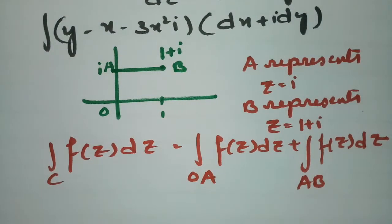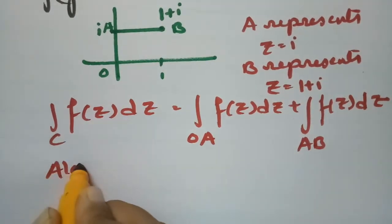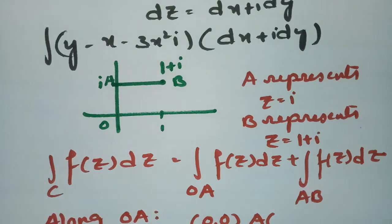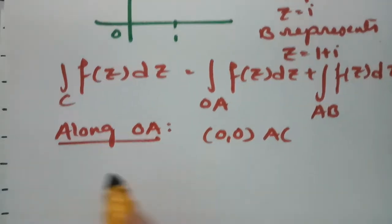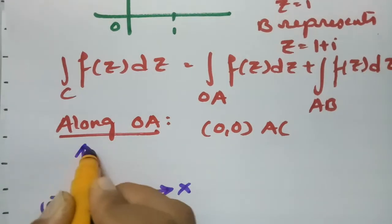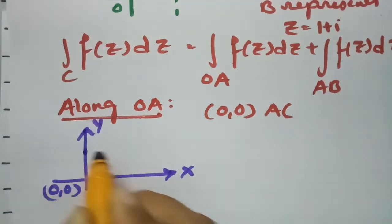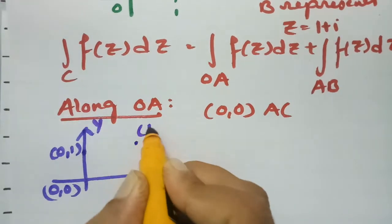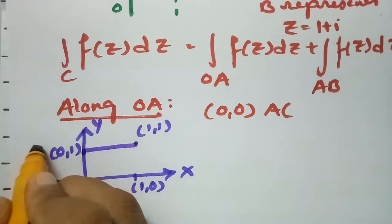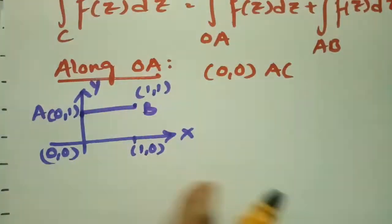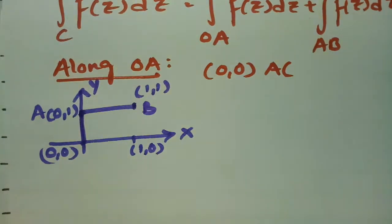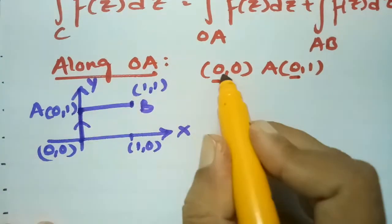First, along OA: O is the origin and A is the point i. In the xy-plane, this corresponds to going from (0,0) to (0,1). We can clearly see that the x-axis is fixed at x=0, and y varies from 0 to 1.